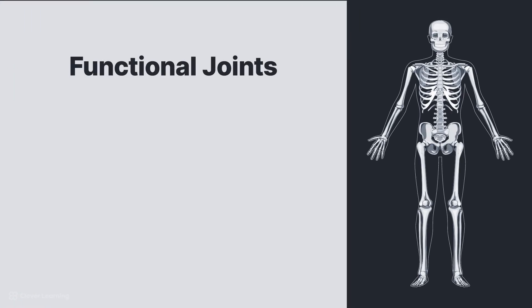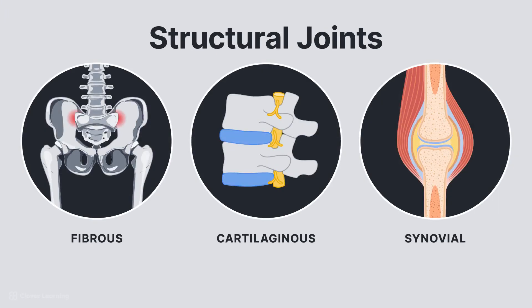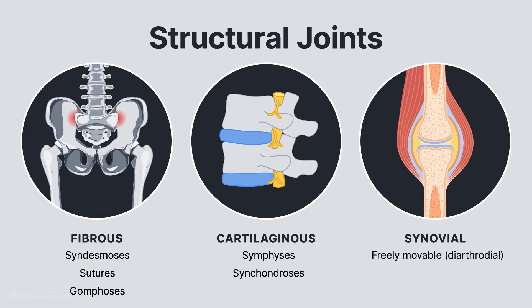In summary, joints are classified as functional or structural. It is important for technologists to know the functional classifications, but structural classification is the most common method. There are three categories of functional joints based on mobility: synarthrosis, amphiarthrosis, and diarthrosis. Structural joints include three primary classifications and 11 specific types. Fibrous joints can be classified as syndesmoses, sutures, or gomphoses. Cartilaginous joints can be classified as symphases or synchondroses. Synovial joints can be classified as hinge, saddle, pivot, condylar, ball and socket, or planar.